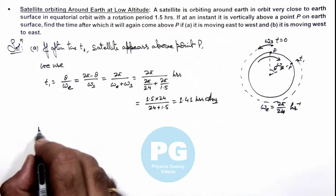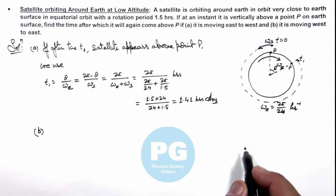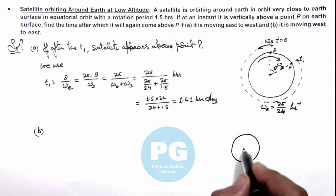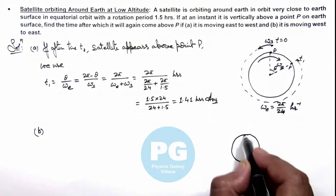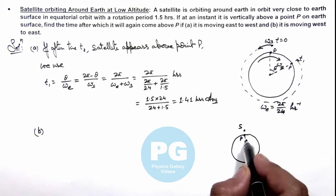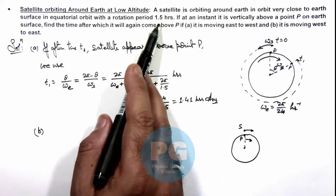We solve the second part when satellite is also moving west to east, that is in the direction of Earth rotation. Then here we can see if this is point P and above this is satellite, and if both are moving in the same sense.